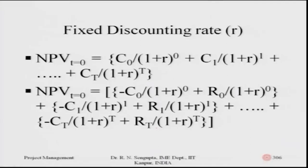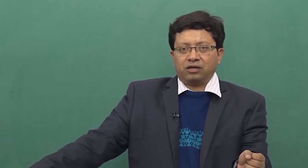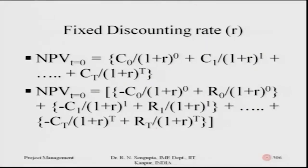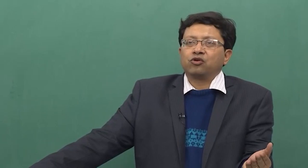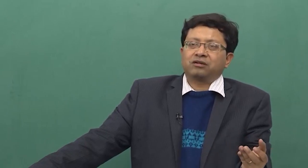Net present value considers inputs — money coming in — and outputs — money going out. If we consider revenues and costs, costs are given with negative values: minus C₀, minus C₁, minus C₂, and revenues as R₀, R₁, R₂ through R_T. The interest rate in both cases may not be the same, as for instance when you take a loan versus depositing money, or when exchanging foreign currency at an SBI counter.